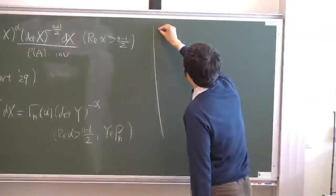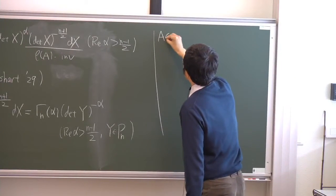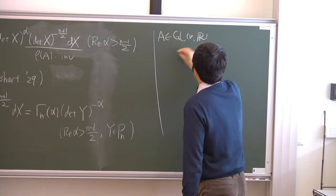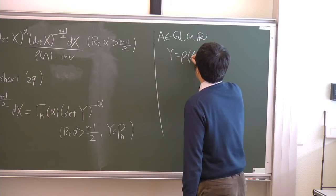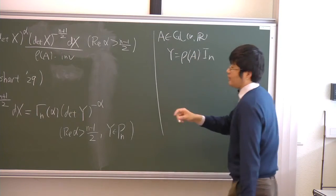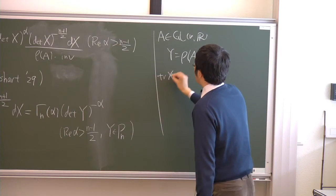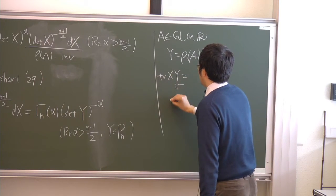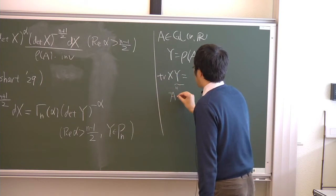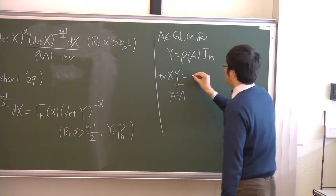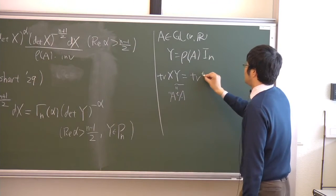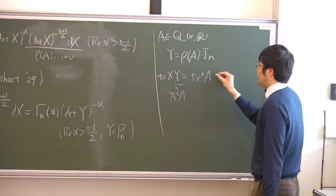Therefore, we take A such that Y equals ρ_A I. Then the trace XY, so Y equals A transpose A. Then by the property of trace,